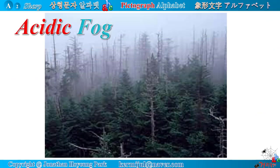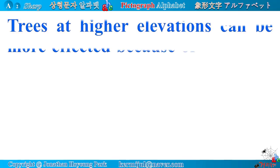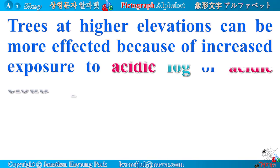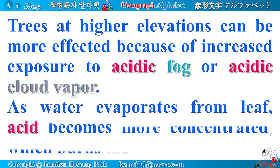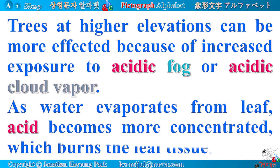Acidic fog also kills trees as acid rain does. Trees at higher elevations can be more affected because of increased exposure to acidic fog or acidic cloud vapor. As water evaporates from a leaf, acid becomes more concentrated, which burns the leaf tissue.